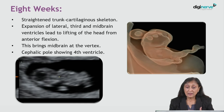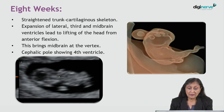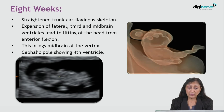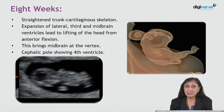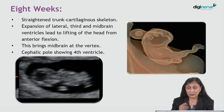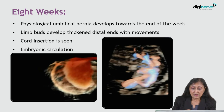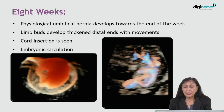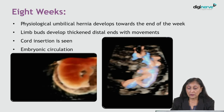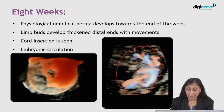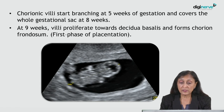At eight weeks, the embryo which had curved at six weeks now again becomes straight, and a cartilaginous skeleton is formed. There is expansion of the lateral and midbrain ventricles leading to lifting of the head from anterior flexion, bringing the midbrain to the vertex level. It is in the eighth week that the physiological umbilical hernia develops. The limb buds start appearing, cord insertion is seen, and the embryonic circulation is completely established. The chorionic villi start branching as early as five weeks and cover the whole gestational sac at eight weeks.